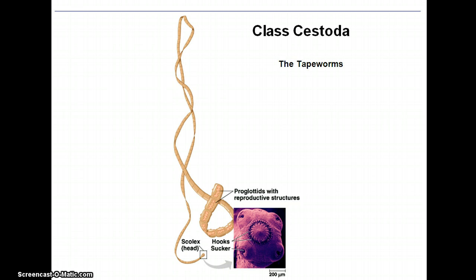They have to get their food transported right in across the tegument as they don't have a mouth to do any ingestion. And when you're living right in the intestine, swimming right in the digested food, it's certainly available. There's a lot of surface area across which these materials can just be transported into the organism so it can use it for its own growth.